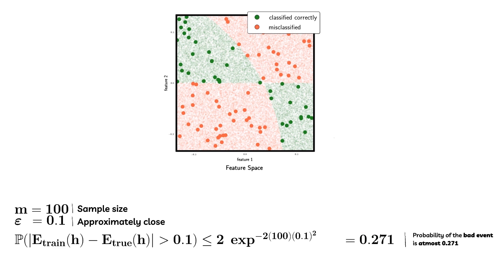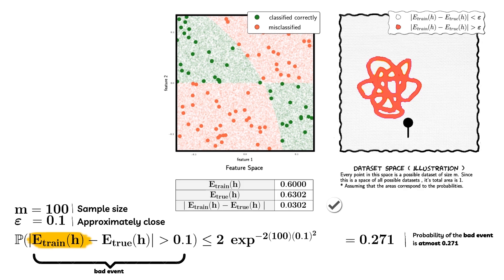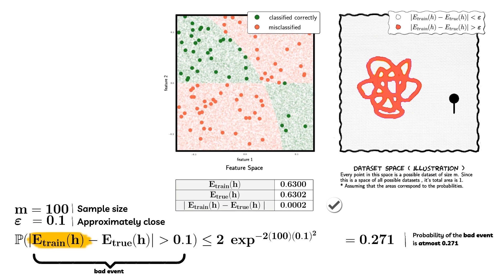This can be read as: the probability of the bad event happening is at most 0.271, where by bad event we mean that the difference between the training error and the true error is more than 0.1. In this expression, epsilon is a constant and the true error is also some constant between 0 and 1. So it is important to note that the training error is a source of randomness in this expression — the training error depends on what data set we have drawn.